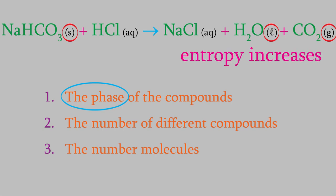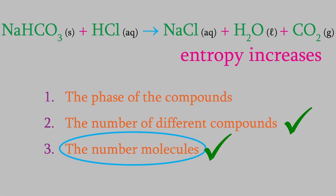Also, notice that the number of different compounds increases. We have two on the reactant side and three on the product side. That's another reason why the entropy will increase. Finally, notice that the number of molecules also increases from two to three. So all three of the factors that can affect the entropy all work to make the entropy go up in this reaction.